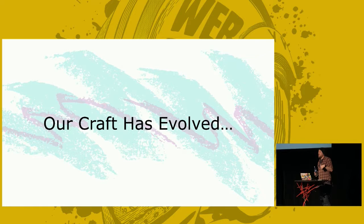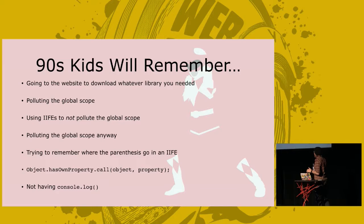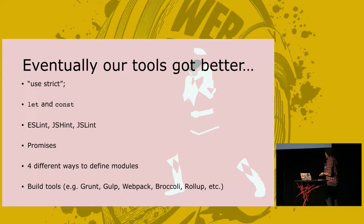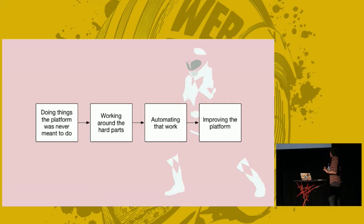There's a whole bunch of stuff that you needed to know — stuff like Object.hasOwnProperty isn't something you need as much anymore, but you'd be iterating up prototypes, and that was a bunch of fun. There are all these things we worked around and eventually came up with solutions for: catching issues before we commit with ESLint, making async clearer with promises, and theoretically having modules nowadays. It just becomes the way we live our lives as JavaScript developers. Then we automate those things with linting tools or build tools, and eventually get around to improving the platform.